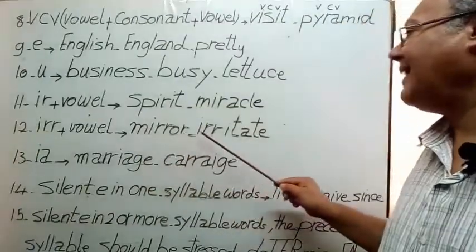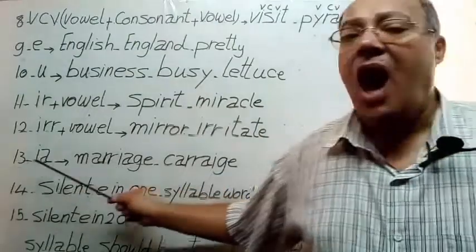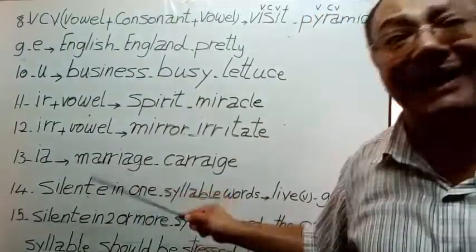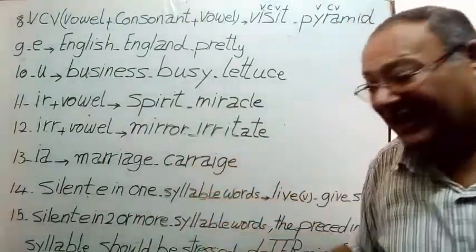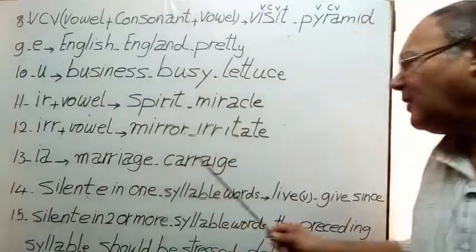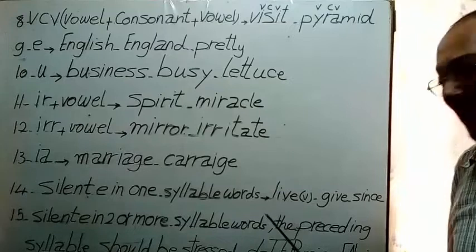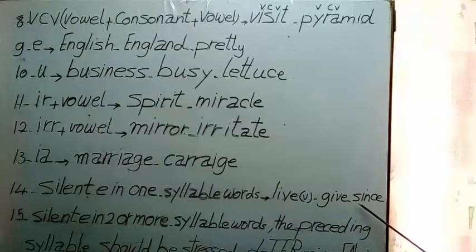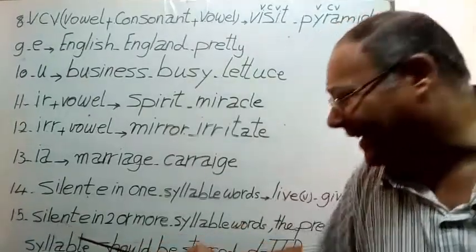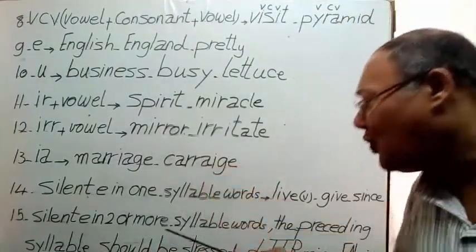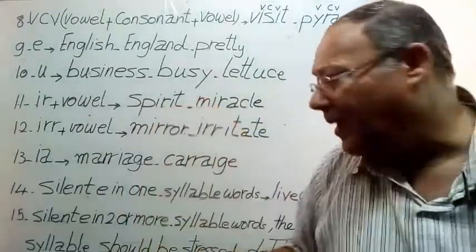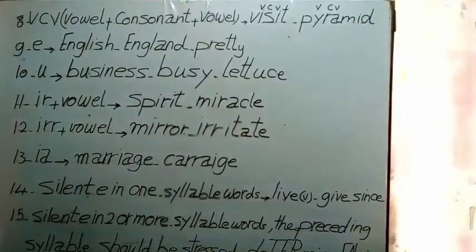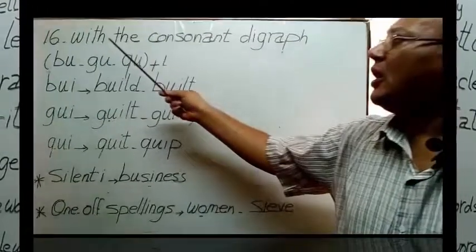IA: marriage, carriage. Silent E in one syllable words: live as a verb, give, since. Silent E in two or more syllable words, but the preceding syllable should be stressed, like determine, engine.